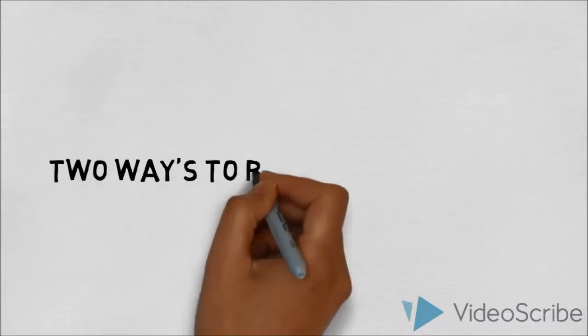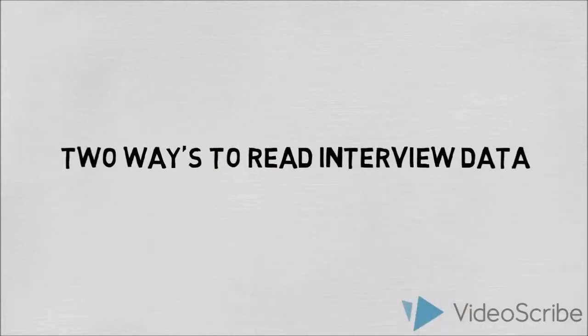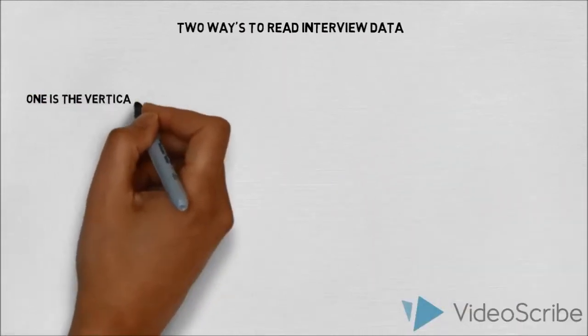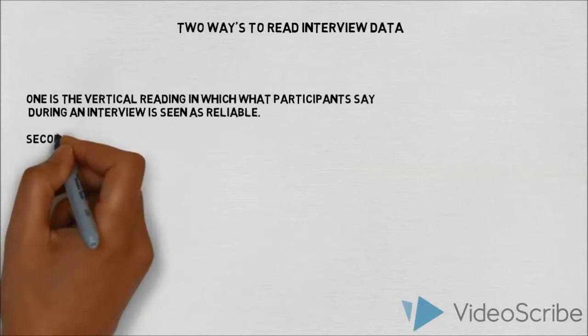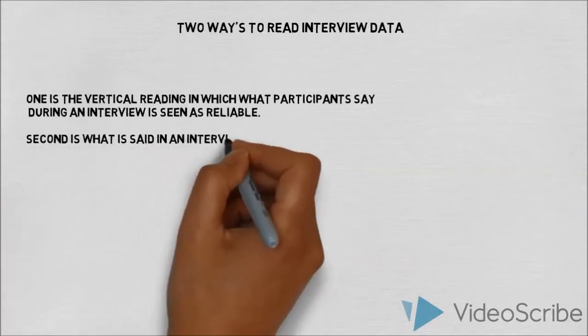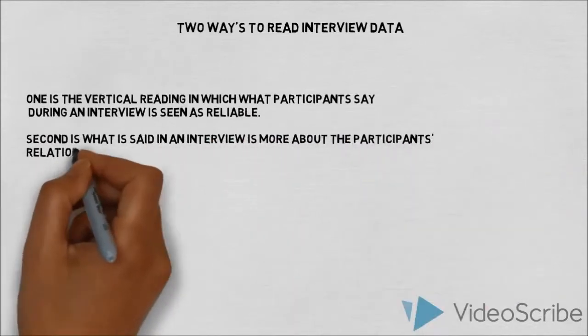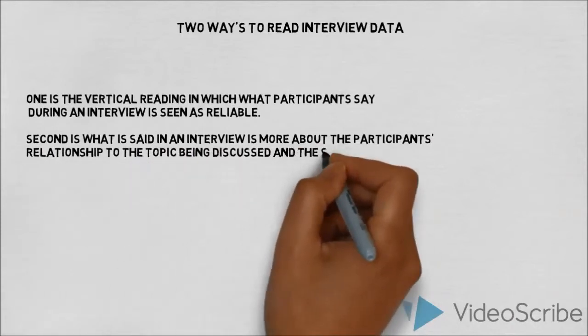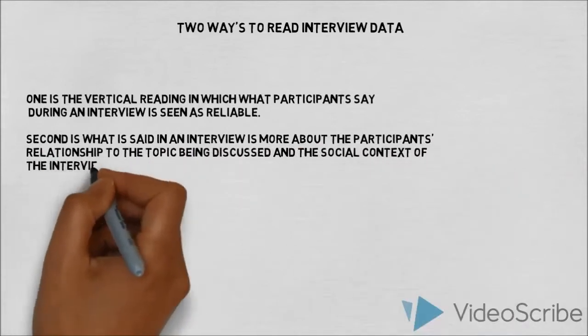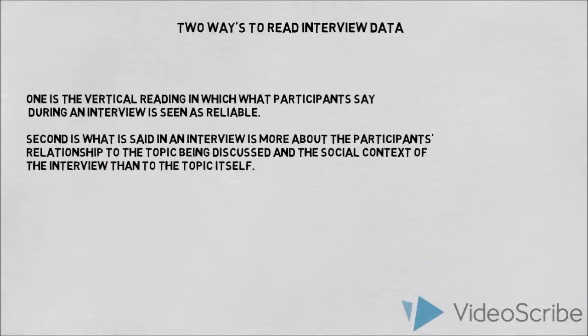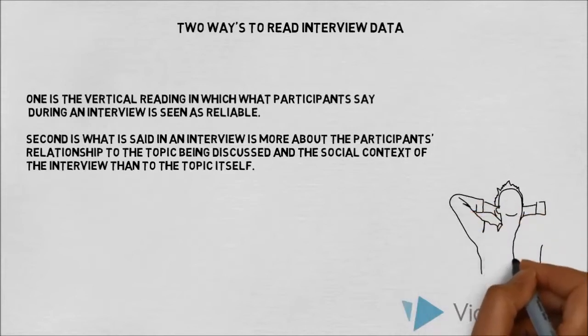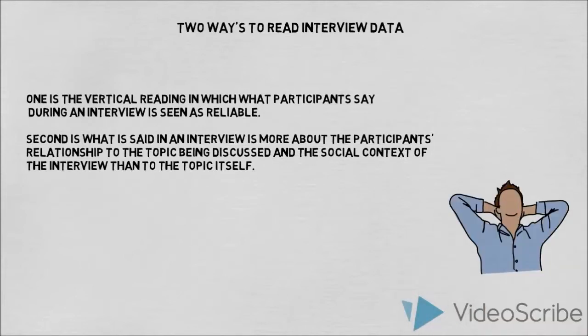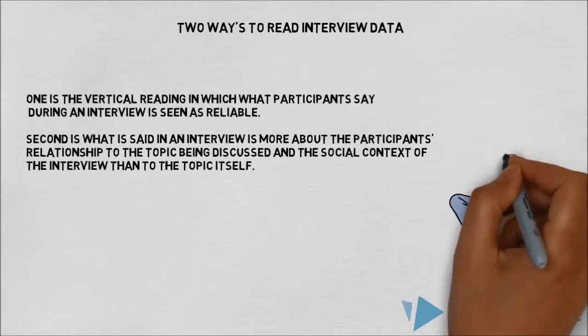There are two ways to read interview data. One is the vertical reading in which what participants say during an interview is seen as reliable. Second is what is said in an interview is more about the participant's relationship to the topic being discussed and the social context of the interview than the topic itself. For example, what is said during the teacher-conducted interview on grades may be largely a factor of the relationship between teachers and students because students may believe that what they say will affect their grades.